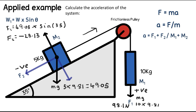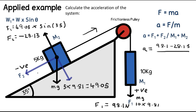Now we have force 1 = 98.1 N and force 2 = −28.13 N. Mass 1 is 10 kg and mass 2 is 5 kg. The acceleration equals the resultant force divided by the total mass: (98.1 + (−28.13)) divided by (10 + 5). Note that we don't make masses negative — mass is a scalar with no direction, whereas force is a vector. The total mass is simply 10 + 5 = 15 kg, and the resultant force is 69.97 N.